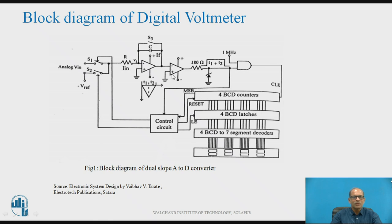The non-inverting terminal of the comparator is connected to ground. The output of the comparator is given to a 180-ohm resistance and a Zener diode, which will clip the output to 4.7V. Then there is an AND gate, and one of the inputs to the AND gate is a 1 MHz square wave. The output of the AND gate is given to a BCD counter. So this DVM consists of an integrator, followed by a comparator, AND gate, and a 4-digit BCD counter.